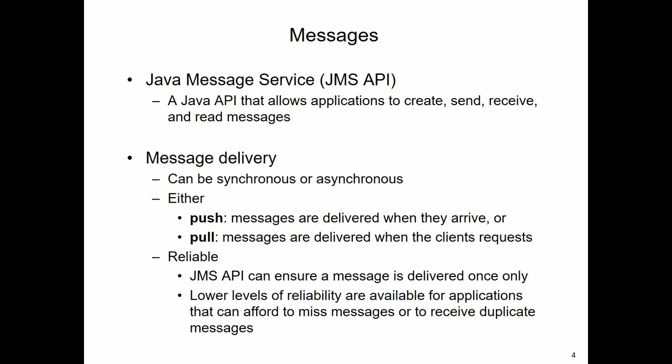The Java Message Service API allows applications to create, send, receive, and read messages. That communication can either be synchronous or asynchronous, and the messages when received by the messaging service can either be pushed out to the receiving client or pulled by the receiving client. We can also ensure that a message is delivered exactly once, or that if a message is missed it will be delivered again until acknowledged. We are also able to define lower levels of reliability if we want to.